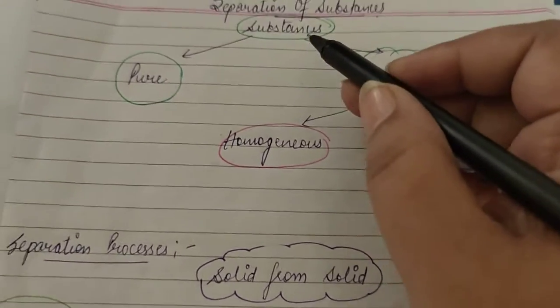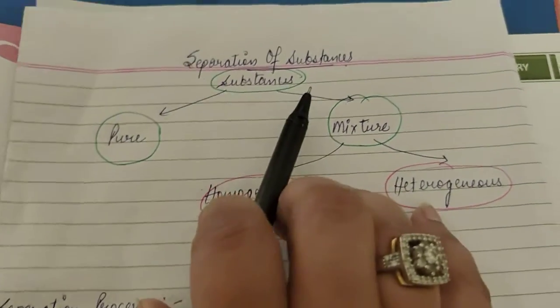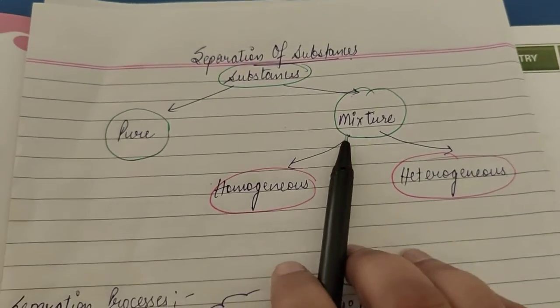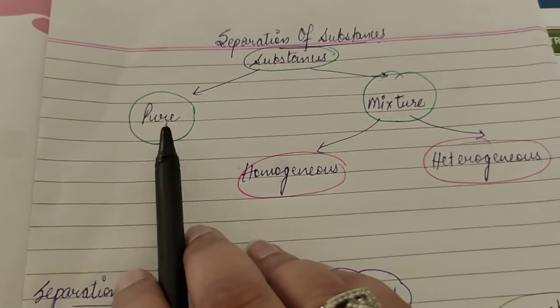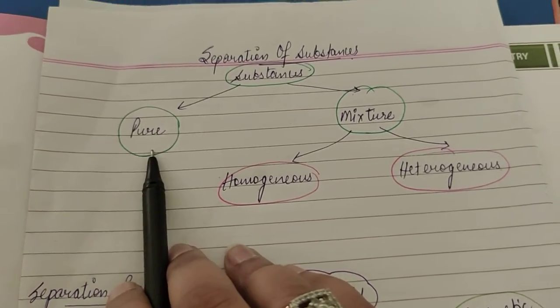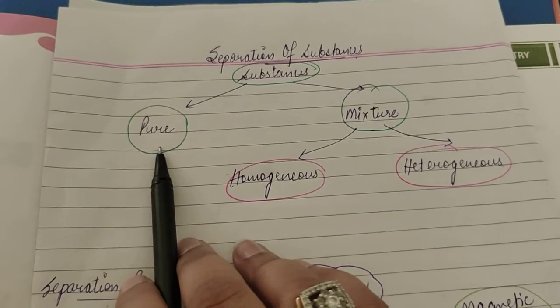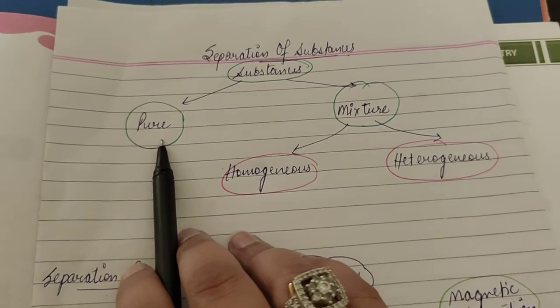Substances normally occur in two forms in nature. One is pure form and the other is mixture. In pure form, the substance exists alone and doesn't get mixed with any other substance, so it need not to be separated.